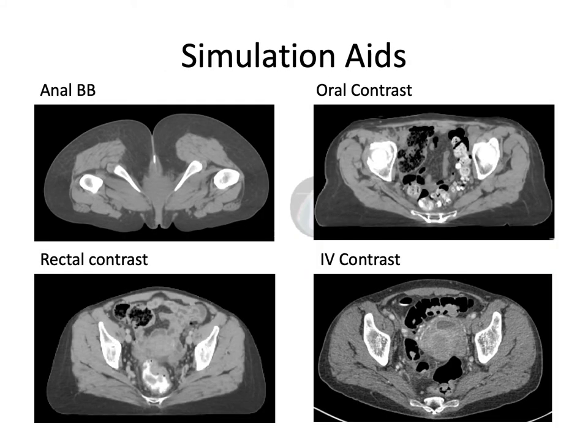Other simulation aids: here I'm showing pictures of an anal BB in the upper left, an example of the rectal contrast I talked about in the bottom left, oral contrast in the upper right — which I don't use quite as frequently but some places do; patients typically really dislike it, but for upper GI it can be helpful to swallow a small amount. And of course IV contrast in the bottom right, which can be really helpful for delineating nodal basins.